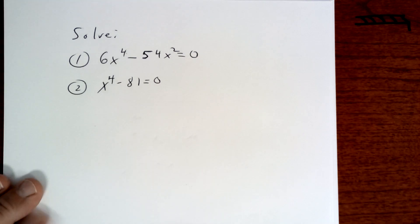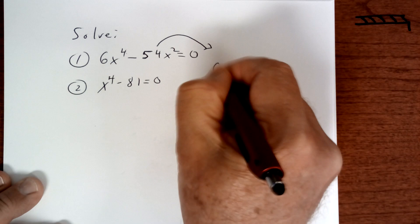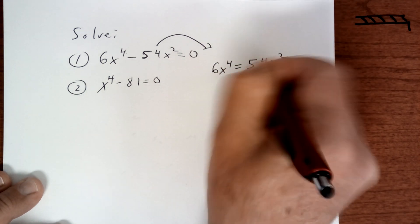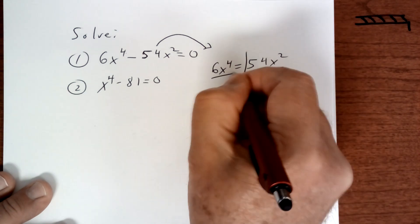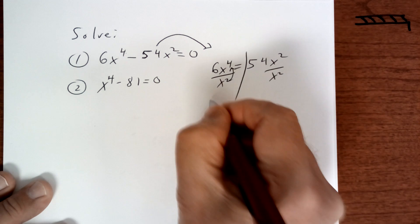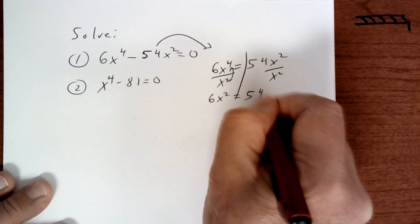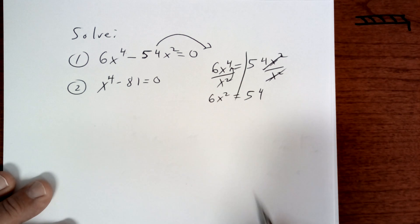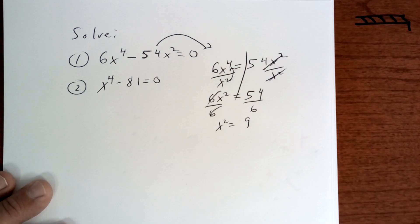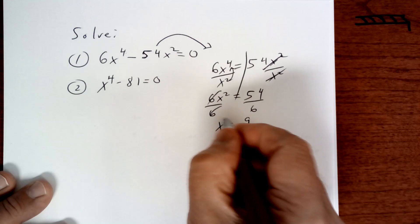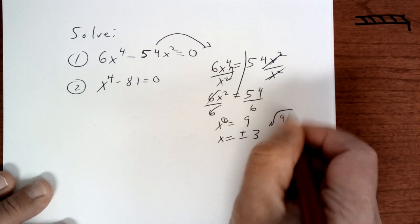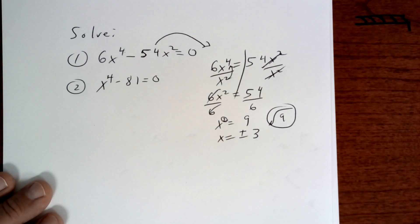So this one right here, I would move this to the other side. So I'm going to get 6x to the 4th equals 54x squared. Then I'm going to divide by x squared, and when I do, two of these are going to drop off. I'm going to divide by 6 and then take the square root. So it's going to be plus or minus 3, because it's the square root of 9, which equals 3.